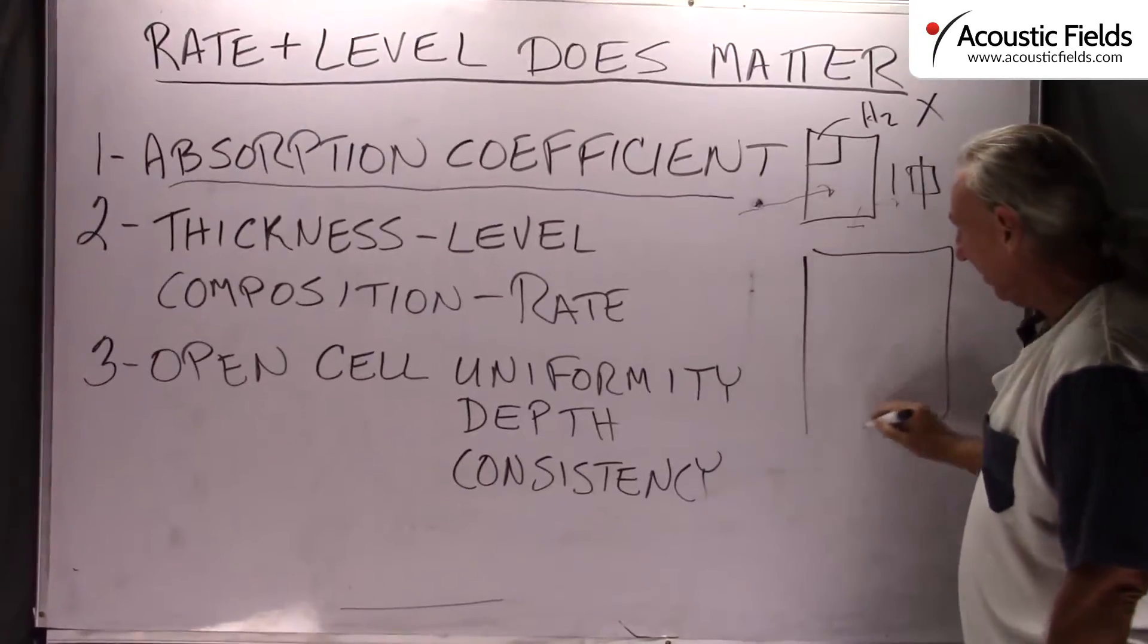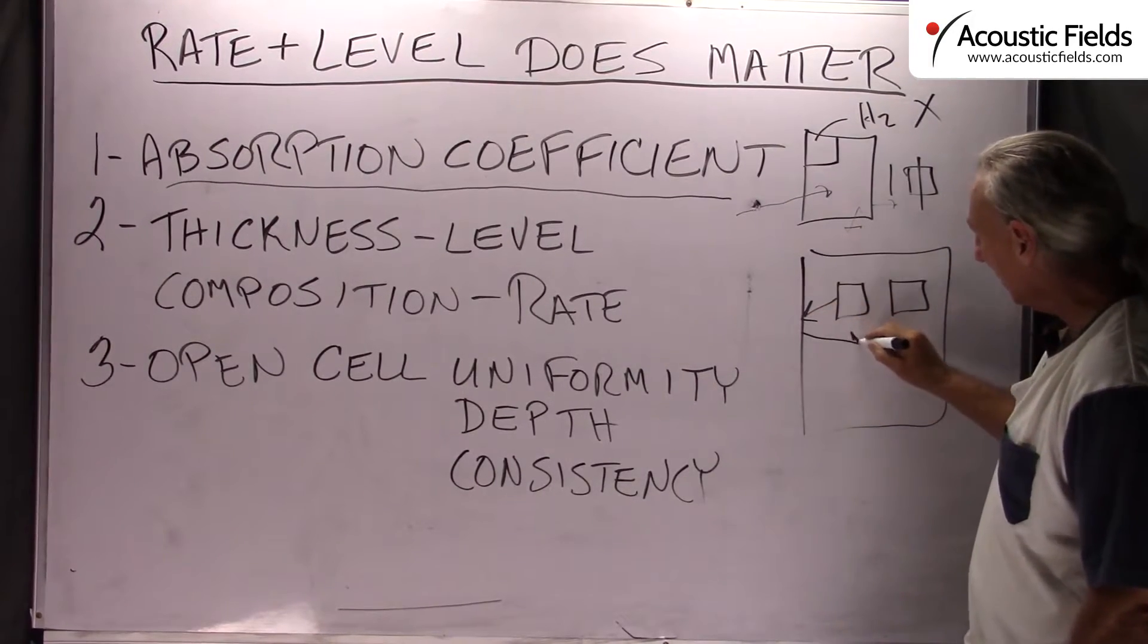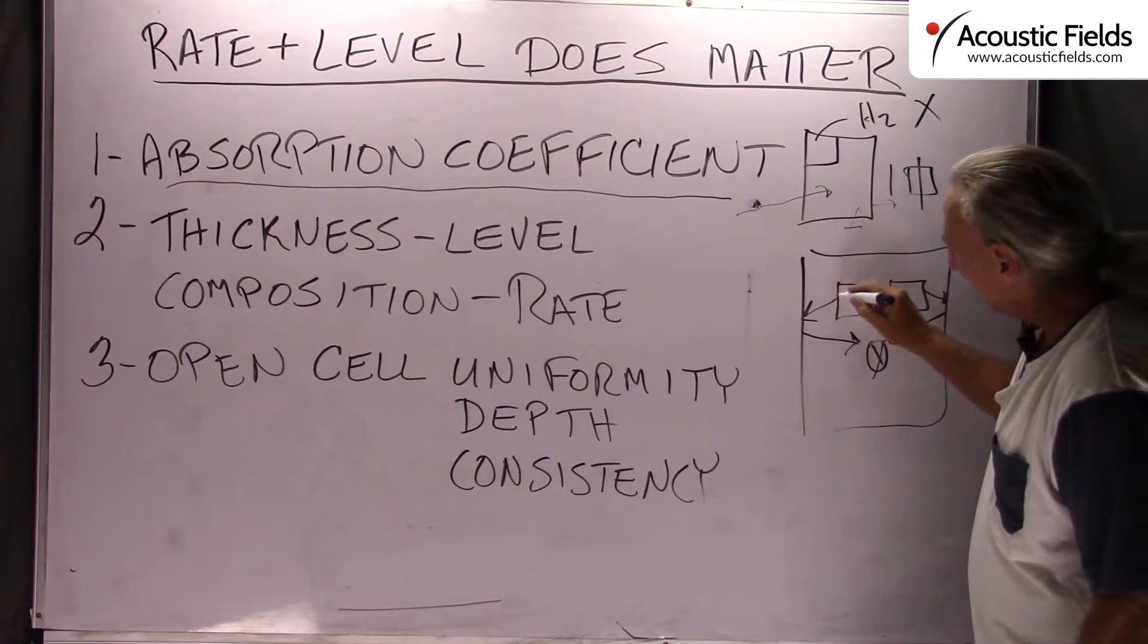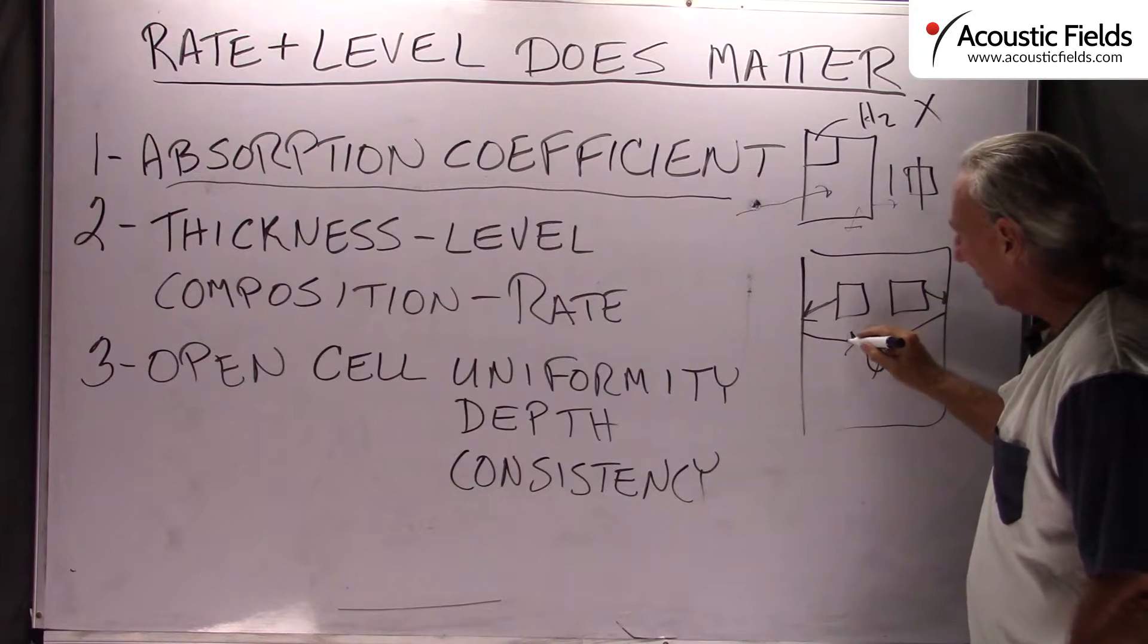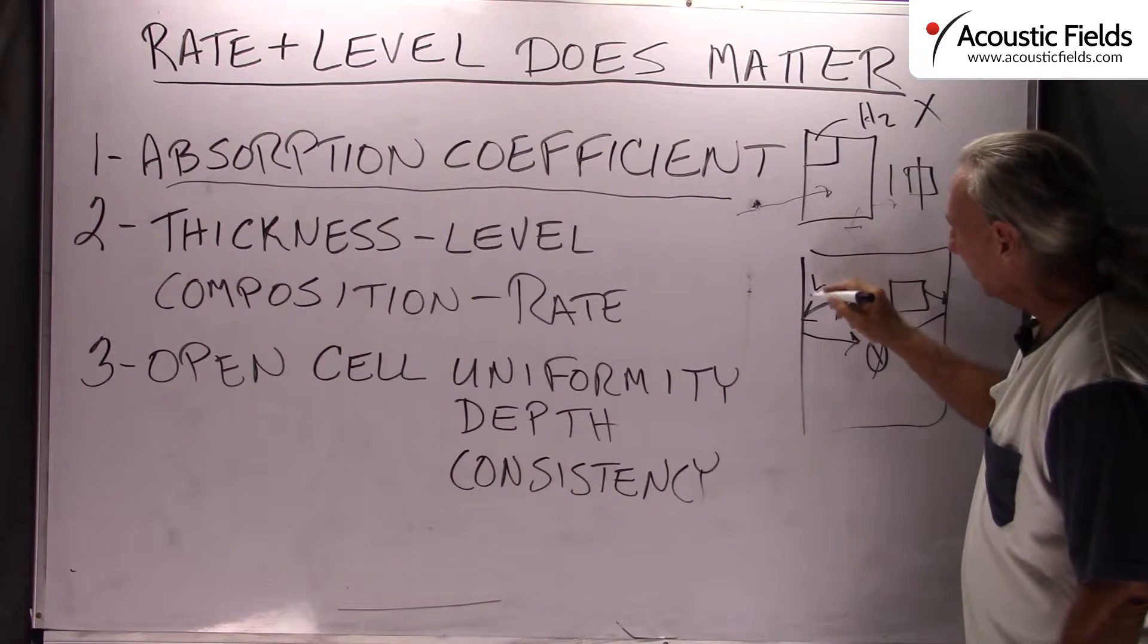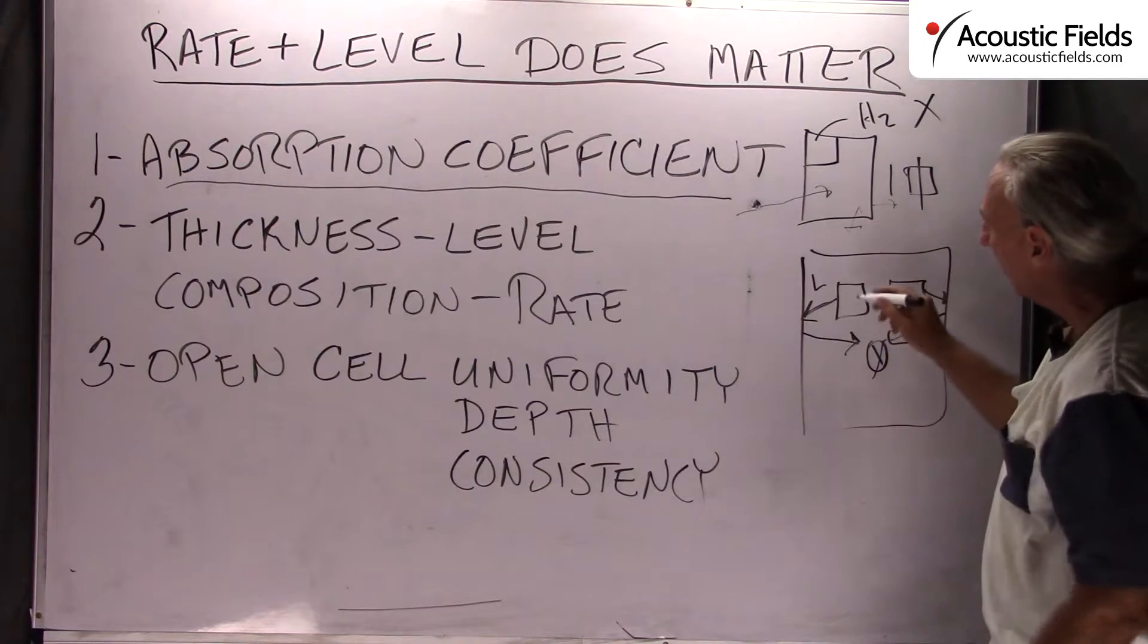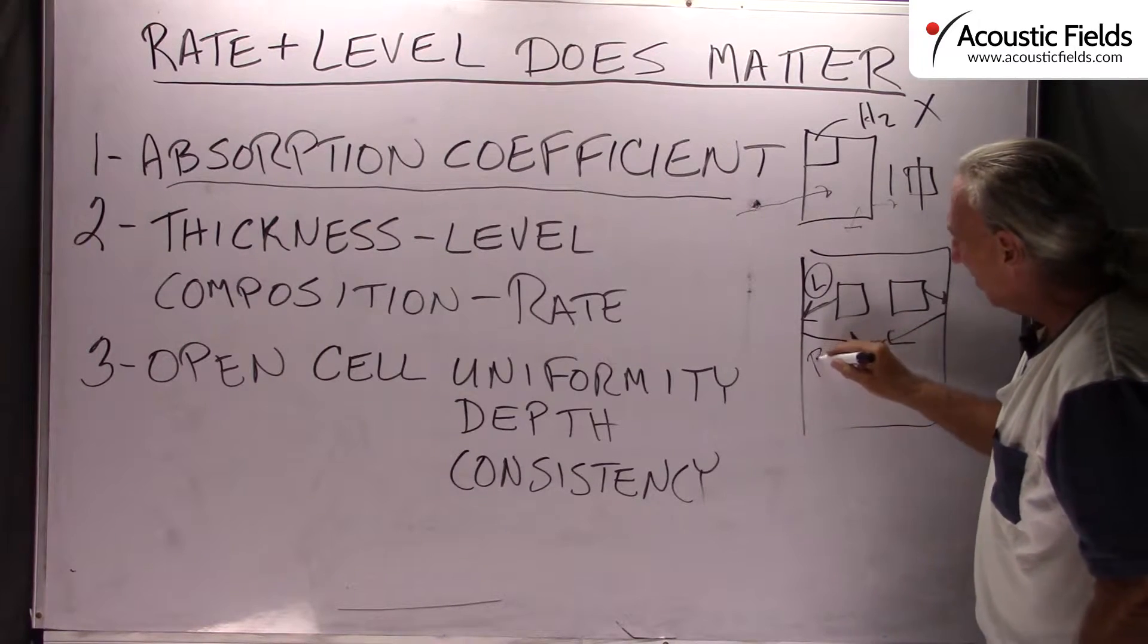Rate and level of absorption is so important in our music rooms because we're dealing with the time signature of really critical reflections. We want to make sure that we're slowing these things down at the right level and rates. Level is critical because we want to make sure we get the lowest frequency that we can within the design parameters of our product. In this case let's just use two inch foam. So we want to make sure we get the lowest frequency we can, but more importantly the rate.